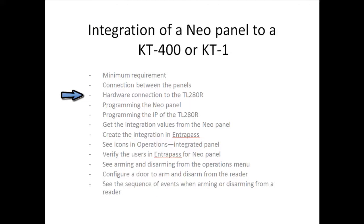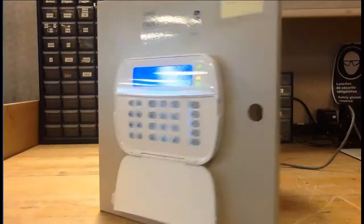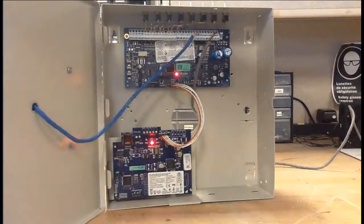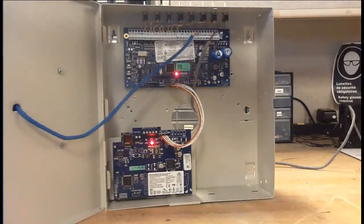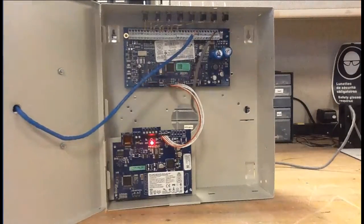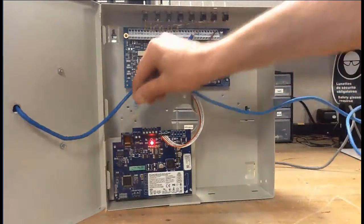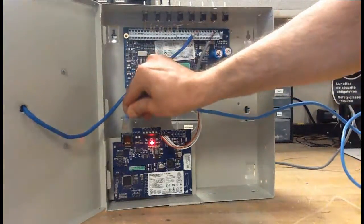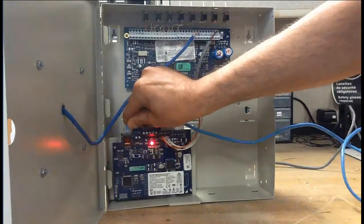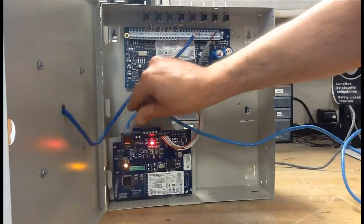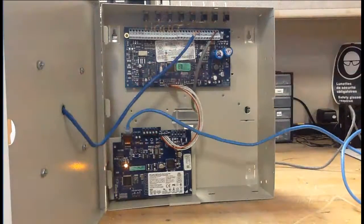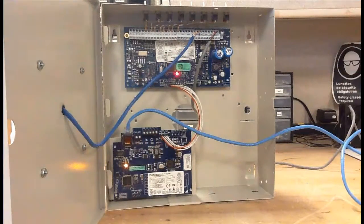Next is the hardware connection to the TL280. We will open up the cabinet — you can see the panel at the top and the TL280 at the bottom. We just connect the Ethernet wire, and you can see the LED starts reacting as soon as we do so.